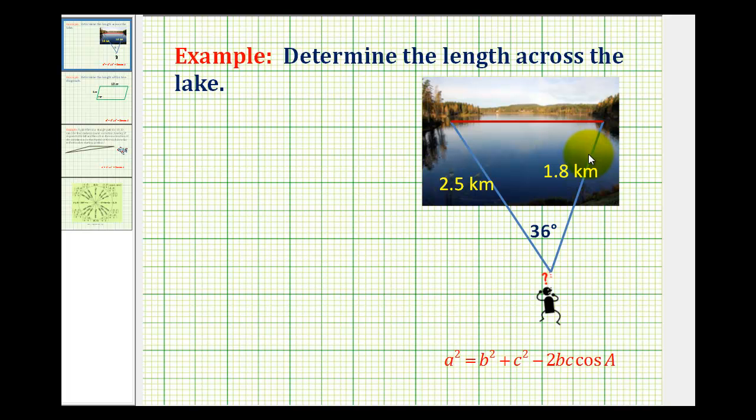Here's an example of an application problem that can be solved using the law of cosines. If this person wants to determine the distance across this lake from the given information, we can do so using the law of cosines.